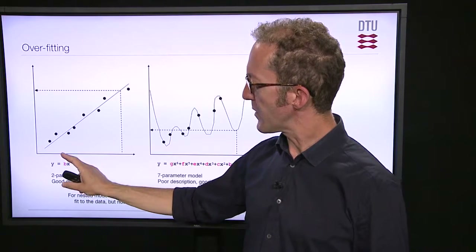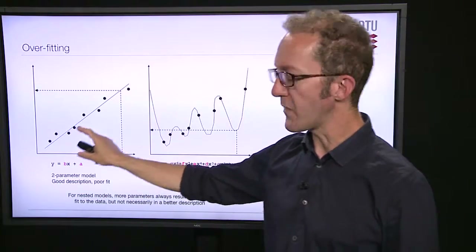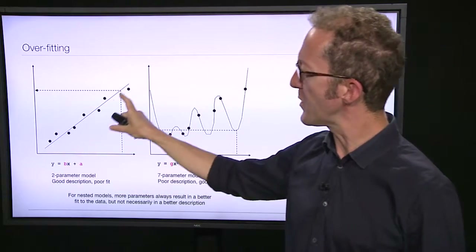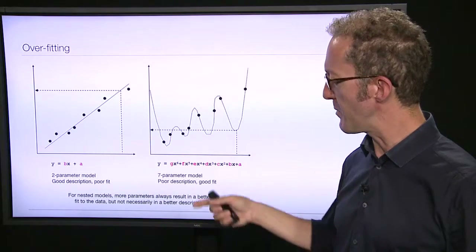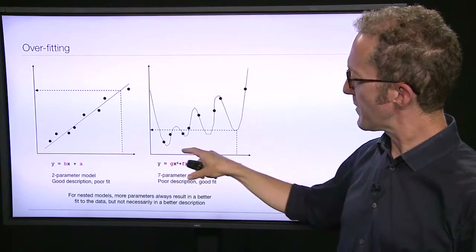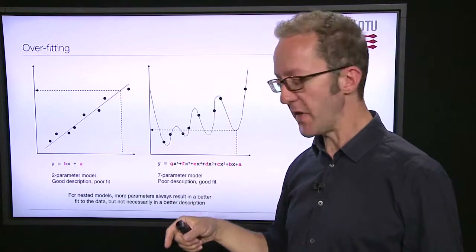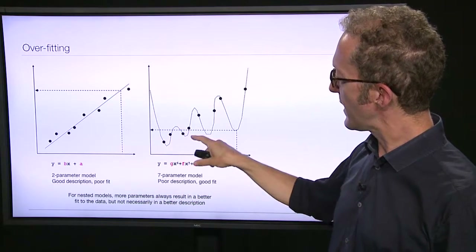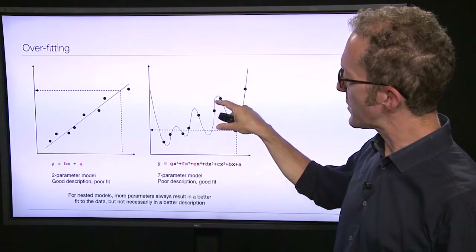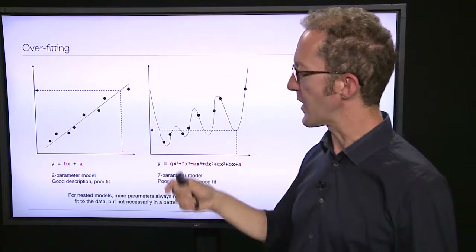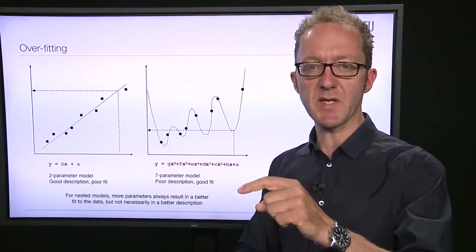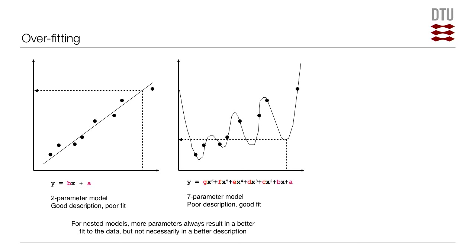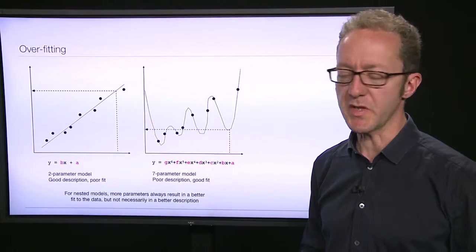This means that the linear model has few parameters and captures the essential relationship in a good way — it's a good description, but the fit is not so good; it doesn't go through any single data point. On the other hand, the polynomial model with seven parameters is a poor description: it doesn't capture what we assume to be the underlying reality. Instead, it has a very good fit, but it achieves that by fitting the noise. The extreme example would be to have one parameter per data point — your model would simply be a list of data points, which tells us nothing about underlying regularities and would not allow us to make predictions at all.